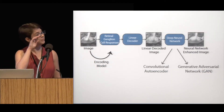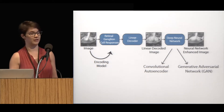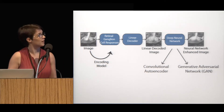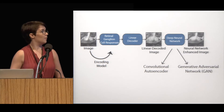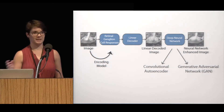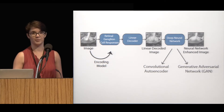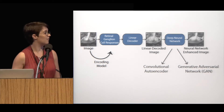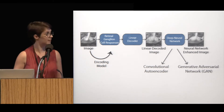Now that we have our encoding model, we simulate responses to all of ImageNet and use that to train our linear decoder and our deep neural network. I'm mostly going to be talking about results using a convolutional autoencoder — convolutional neural networks consist of layers where at each layer there's a set of filters that operates over the whole image, and autoencoders compress representation and then expand it back out. I'll also touch on some results that we got using generative adversarial networks.